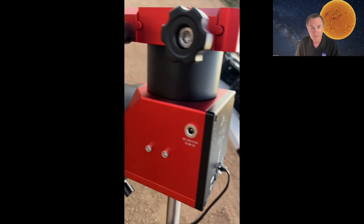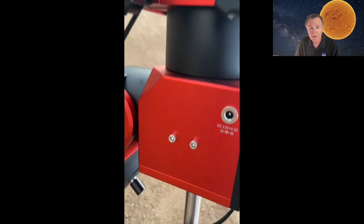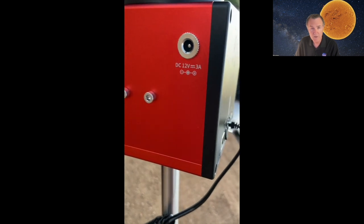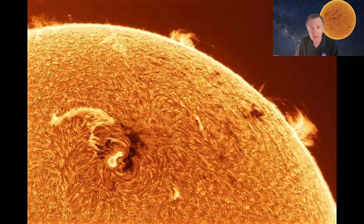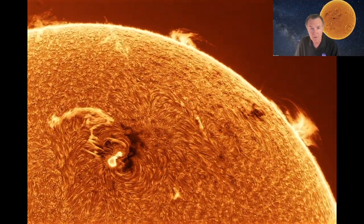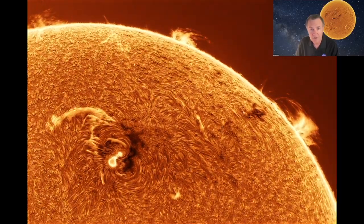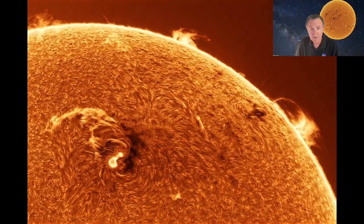You may wonder why they put a guide port on the mount. Well, it's essential for me. I do a lot of solar work. The mount tracks well on the sun by itself, even though I'm doing a sloppy daytime polar alignment using just my phone pointing north. But to do a two-hour solar time lapse, I need to be able to guide on the sun.